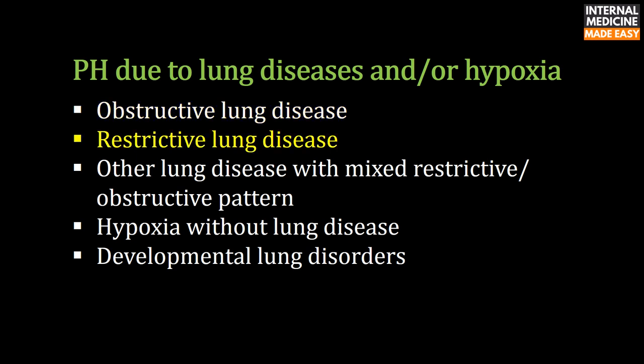Restrictive lung diseases associated with pulmonary hypertension include idiopathic pulmonary fibrosis, sarcoidosis, etc. Sustained hypoxia results in pulmonary vascular remodeling, medial thickening, and extension of smooth muscle into partially muscular arteries.